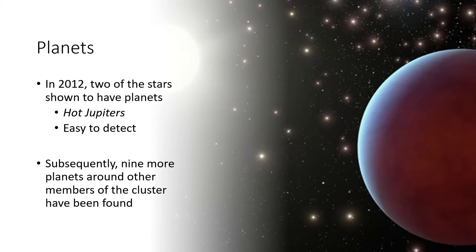This makes them easy to detect, so it's no surprise that we should be finding them first. But subsequently, with improving technology, we've managed to find nine more planets around the members of this cluster. So they're probably everywhere, and once we have better instruments to inspect all these stars, we're going to find that they've all got planets. That seems to be the way of things and the result from the various surveys that have been done.